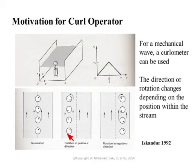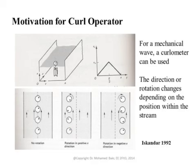Now let's look at another case where the curlometer is a little to the left in the tank, flowing with the water in the z-direction. Because the velocity to the right of the curlometer is stronger than to the left, the water pushes the curlometer to start rotating in the counterclockwise direction. The black dot starts to rotate counterclockwise as it moves.